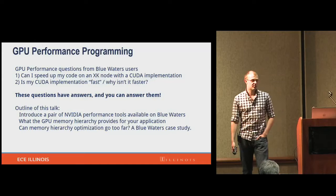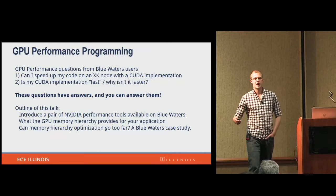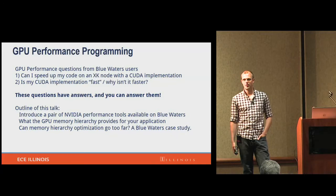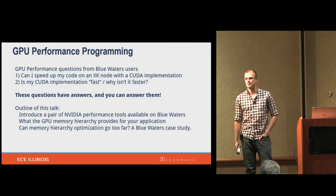A lot of GPU performance struggles come from GPU memory hierarchy. You may be aware of CPU memory hierarchies and caches — GPU is similar in some ways, different in others. I wanted to give a brief highlight of that. Then Simon is going to talk about an actual application running on Blue Waters where some optimization was done, and it actually caused a little bit of a performance loss and how he corrected that, to show that there's some nuance.